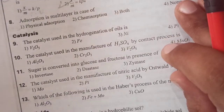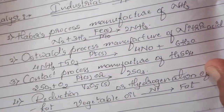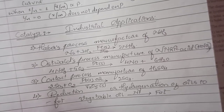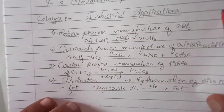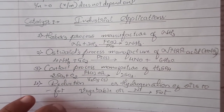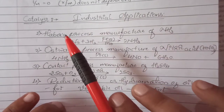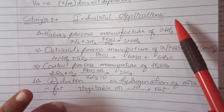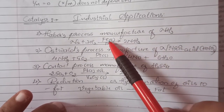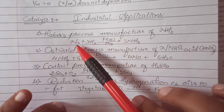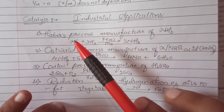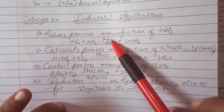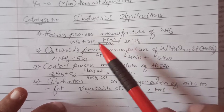Before proceeding into the questions directly, let me briefly cover the industrial applications. First, in Haber's process, manufacture of ammonia takes place. The catalyst used is iron, which is in the solid state, while both reactants are in the gaseous state — so this is heterogeneous catalysis. Iron is the catalyst and molybdenum is the promoter.